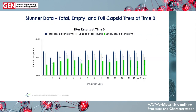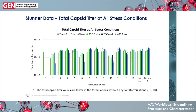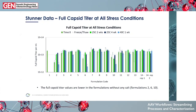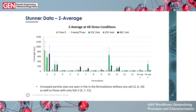Looking at results from the stability perspective across all stress conditions — time 0, freeze-thaw, 25°C at 2 and 4 weeks, and 40°C — total capsid titer is shown on the y-axis and formulation codes on the x-axis. You can see that the total capsid titer values were lower in formulations without any salt: formulations 2, 6, and 10. Similarly, looking at full capsid titer, you see the same trend — formulations without any salt had lower titer values.